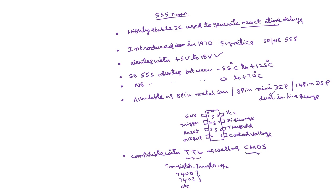On the other hand, there is another family called CMOS logic family. CMOS uses MOSFETs, whereas TTL uses bipolar junction transistors. MOSFETs are again N-type and P-type. CMOS uses both N-type as well as P-type. There are some advantages of CMOS over TTL. The 555 timer IC is compatible with both CMOS logic as well as TTL logic.